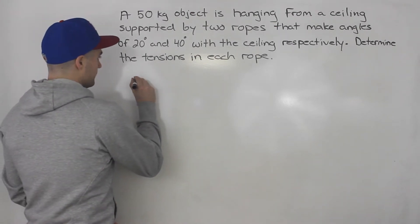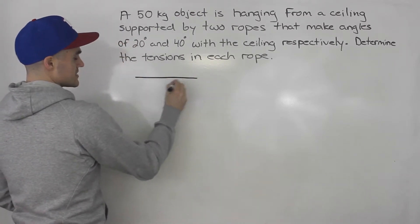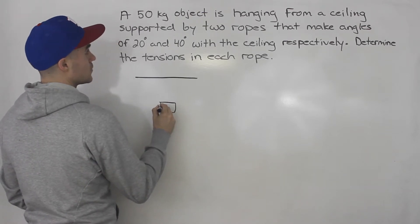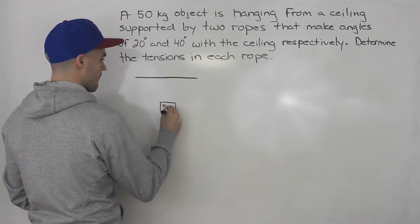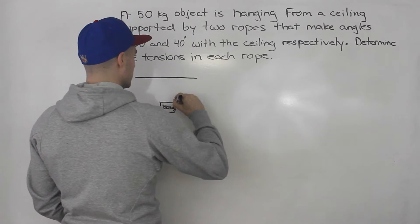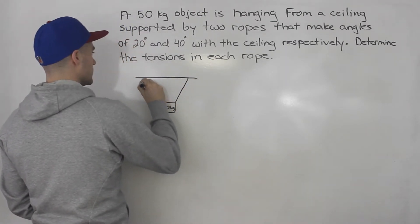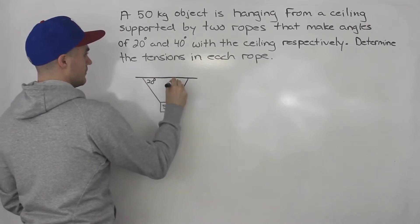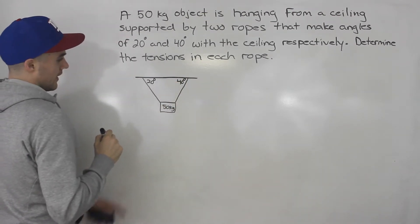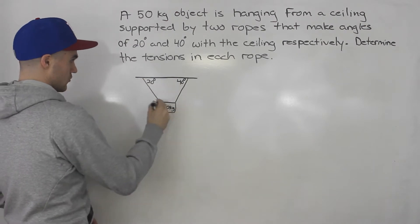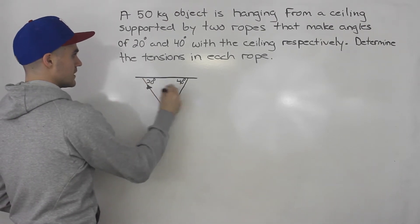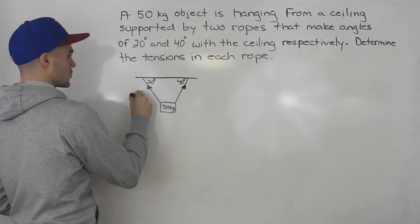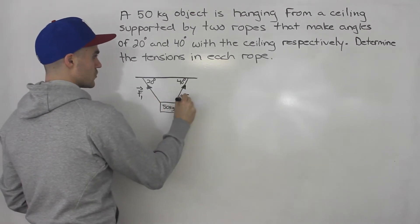So let's draw a diagram of this scenario. Let's say this here is the ceiling. We have an object here, and this object weighs 50 kilograms. It is supported by two ropes — these two ropes right here — and these two ropes make angles of 20 degrees and 40 degrees with the ceiling. We have to calculate the tensions in each rope. Tension is just a force, so we're going to be calculating the force of this rope — let's call it force one — and then the force of this rope — let's call it force two.